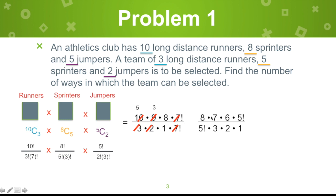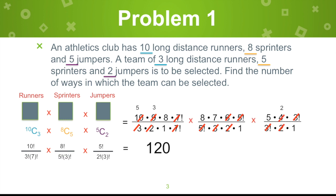For the second one, expand 8 factorial as 8 times 7 times 6 times 5 factorial, and in the denominator 5 factorial times 3 times 2 times 1 — cancel out the common factors. For the last one it works similarly. Multiplying all three, we get 120 times 56 times 10, and the answer is 67,200 teams.